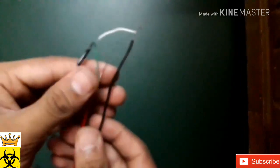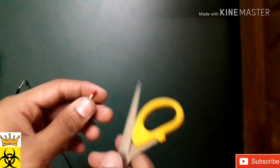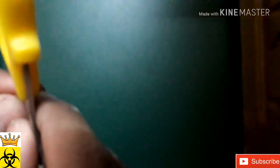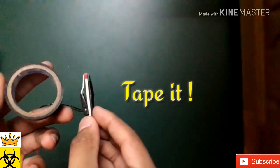Join one of the wires with the positive wire and the other with the negative one. Take a scissor and put a little scratch over the head of the match, then tape the match with the wires.